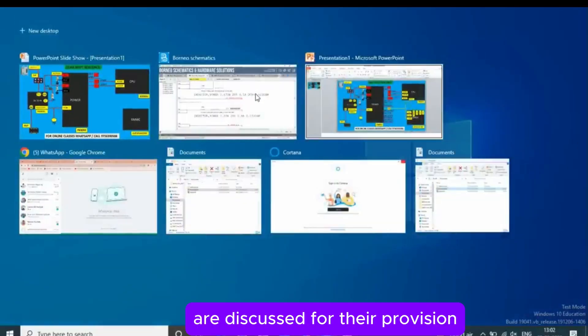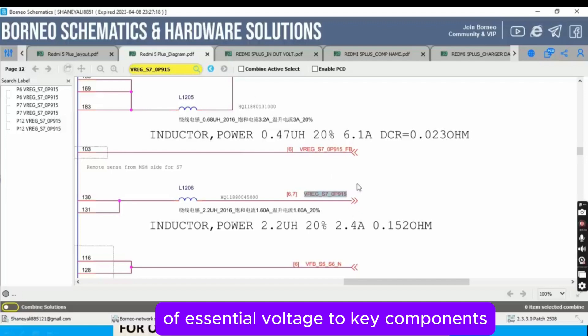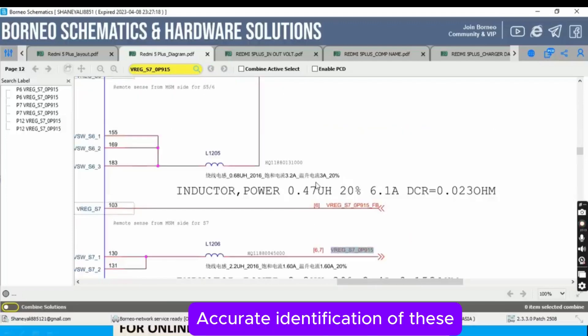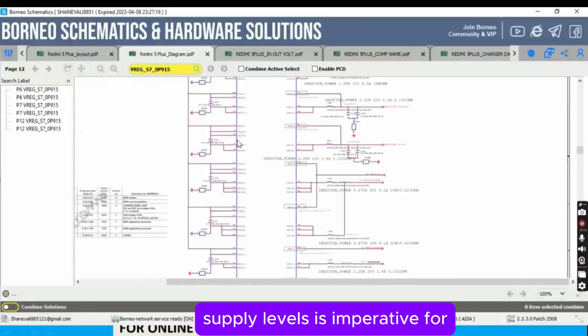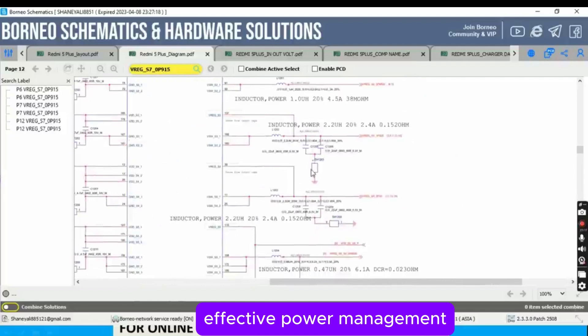Various supply levels, such as S4 and S2, are discussed for their provision of essential voltage to key components like the CPU. Accurate identification of these supply levels is imperative for effective power management.